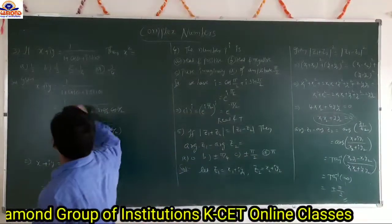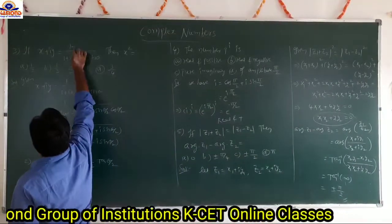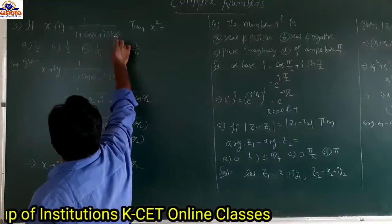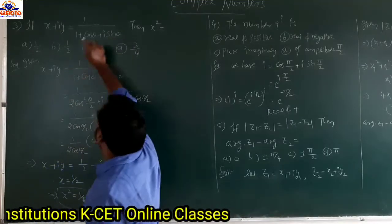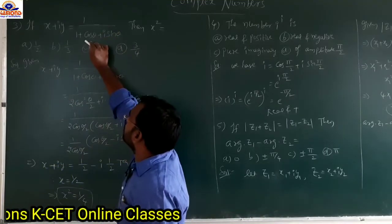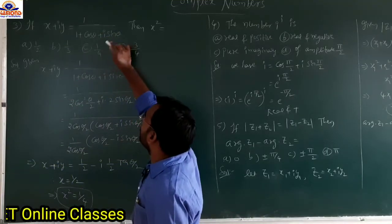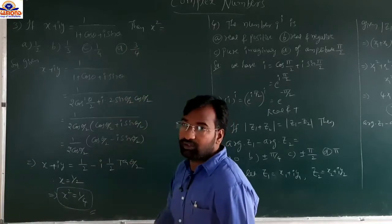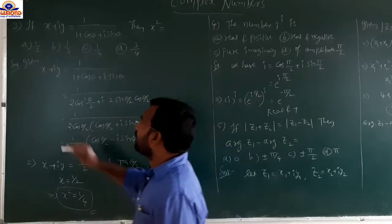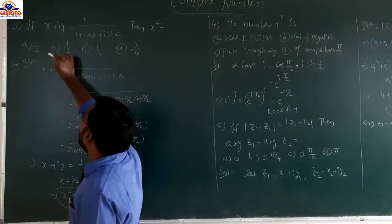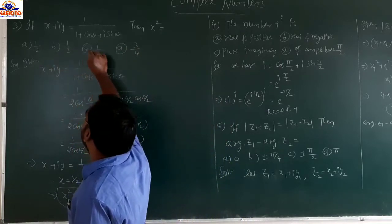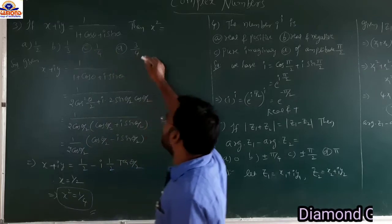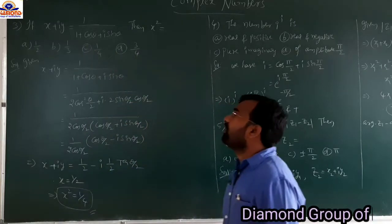If x plus iy equals 1 by (1 plus cos θ plus i·sin θ), then x² equals what? Option a: 1/2, option b: 1/3, option c: 1/4, option d: 3/4.